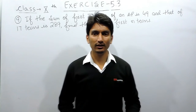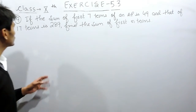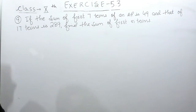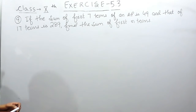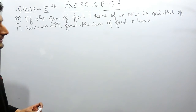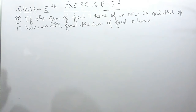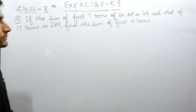Hello everyone. In this video we are going to solve question number 9 of exercise 5.3. The problem states: if the sum of first 7 terms of an AP is 49 and that of 17 terms is 289, find the sum of first N terms.